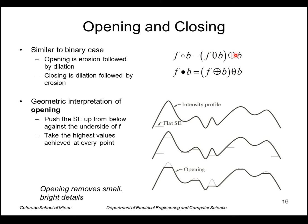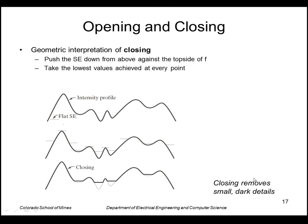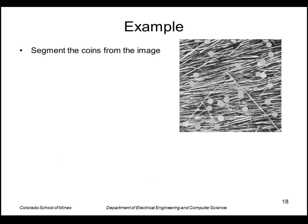So opening is erosion followed by dilation. Closing is dilation followed by erosion. So just like we had an interpretation in the binary case, we have a interpretation in the grayscale case. Opening says push the structuring element up from below. Take the highest values achieved at every point. So for example here on this profile, this is the highest that the structuring element can go. And we take the union of all those. So we essentially get back the same curve, but we've removed small bright details. Closing is pushing the element down from above against the top side. And we take the lowest values at every point. So we essentially get back the same curve where we remove small and dark details.